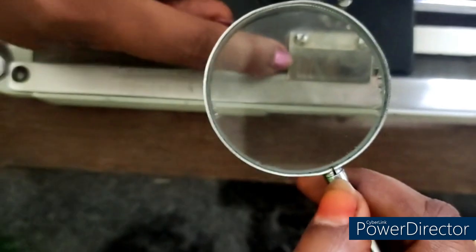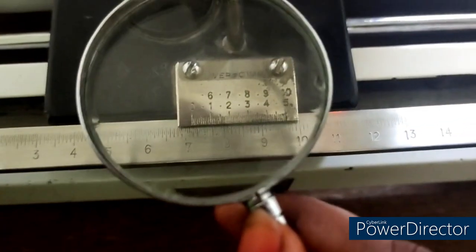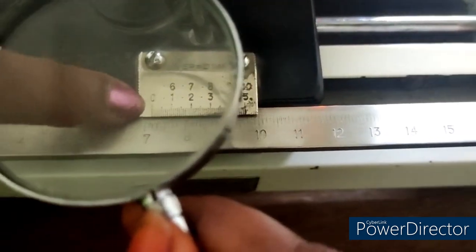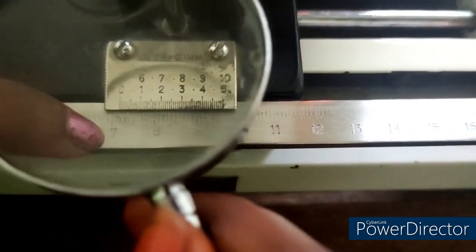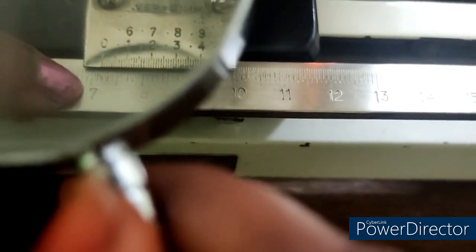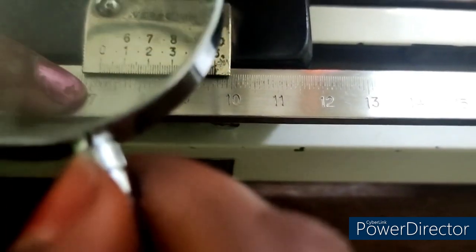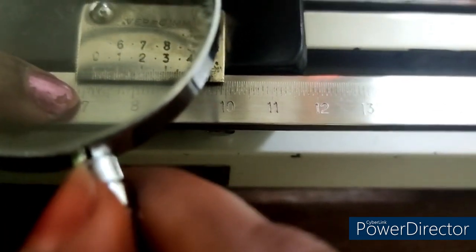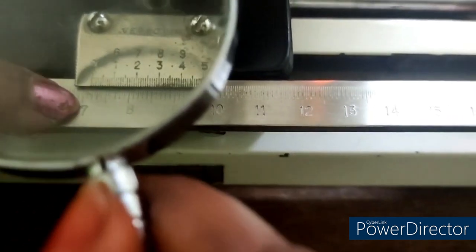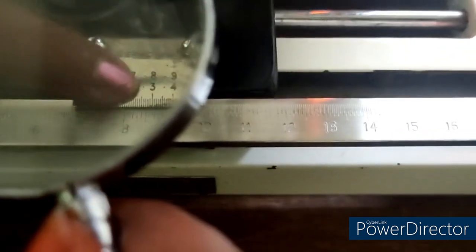From the 0th line we should match. The main scale reading, that is vernier scale reading, is 7.2 nearly. Then among this 50 lines we have to see the coincidence for this main scale reading.